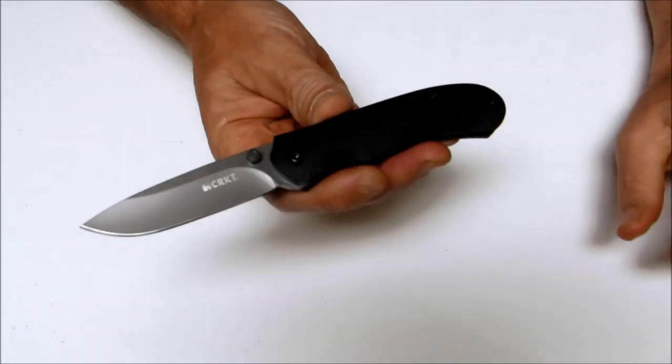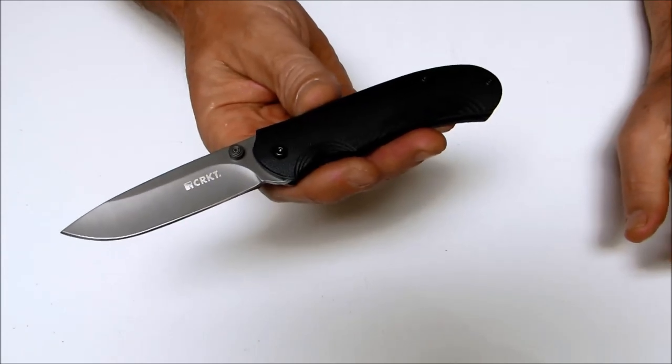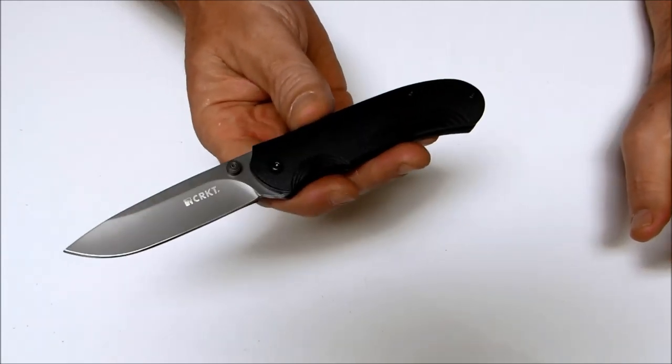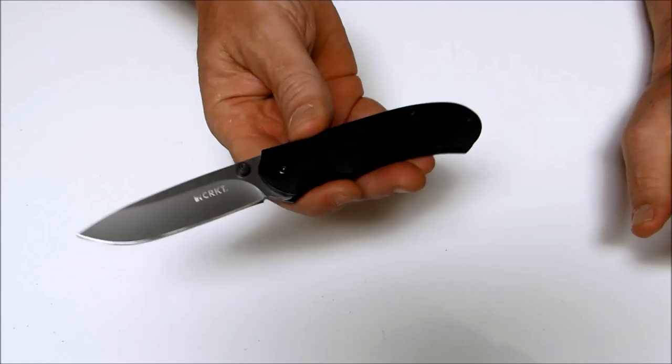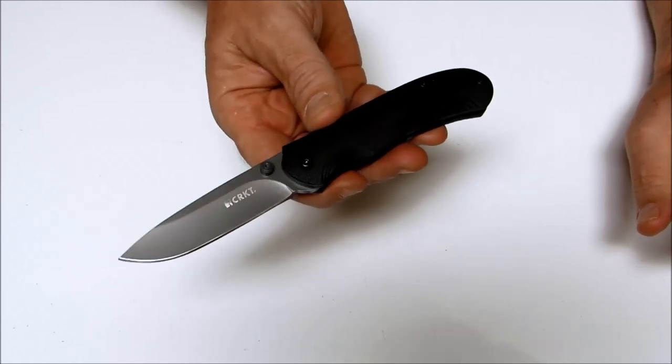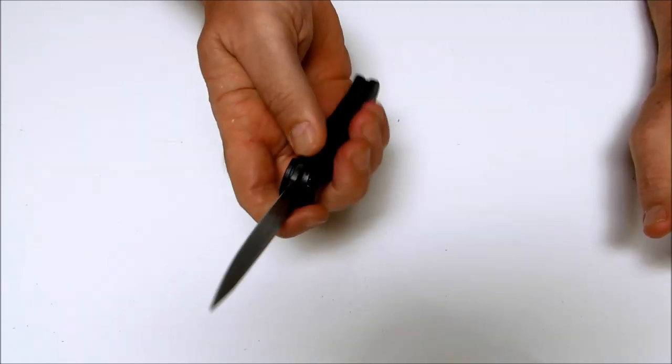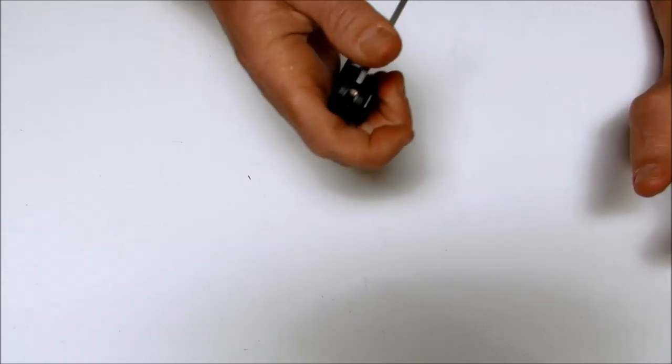Today on Oso Grande Knives TV we're looking at the CRKT Incendor folding knife. This is an assisted opening folder, model number 6870. It was designed by veteran knife maker Ken Steigerwald.